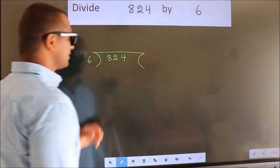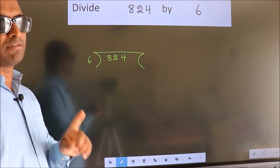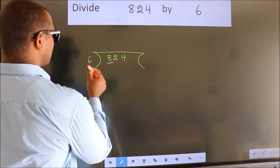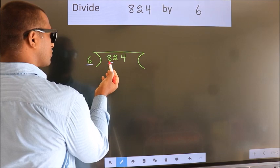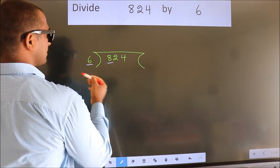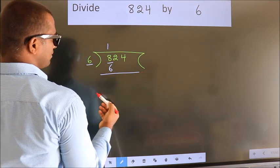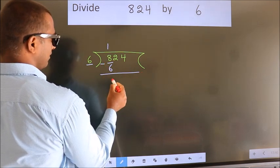This is step 1. Next, here we have 8, here 6. A number close to 8 in the 6 table is 6 once, which is 6. Now we should subtract. We get 2.